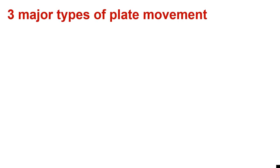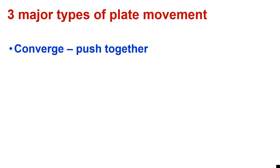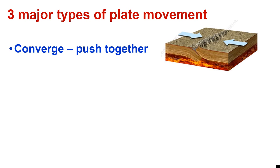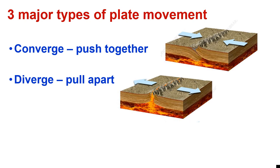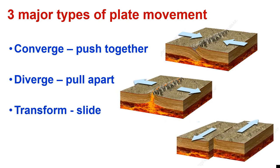All of these plates move, and there are three major types of plate movement. When plates come together and push together, they converge — just like this picture — they push together and form mountains. If they pull apart, it's called diverging, and when the plates pull apart, the hot magma creates new land forms. Or they can transform, and that's when two plates slide against each other.